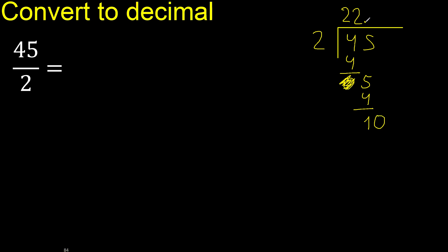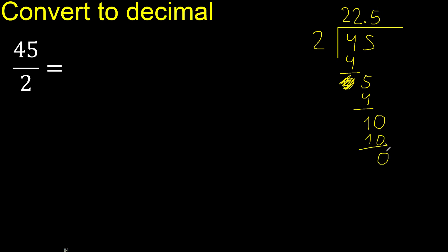Always complete with 0. Add a decimal point, bringing down a 0 to make 10. 2 multiplied by 5 is 10. 10 minus 10 is 0, therefore finish.